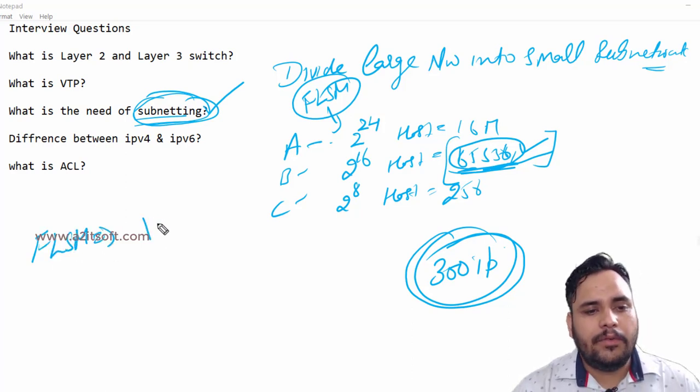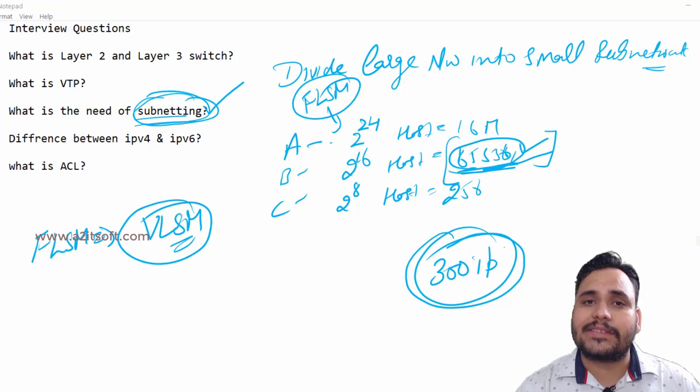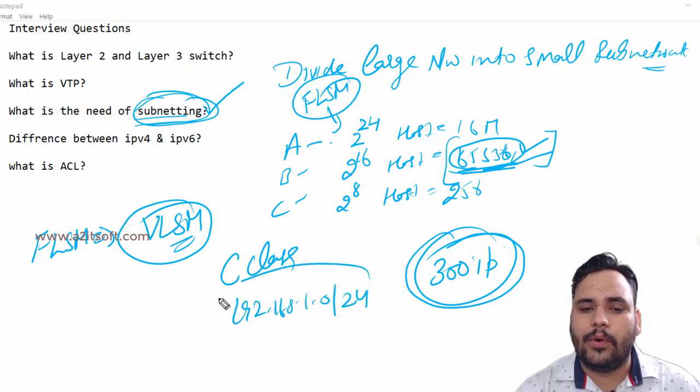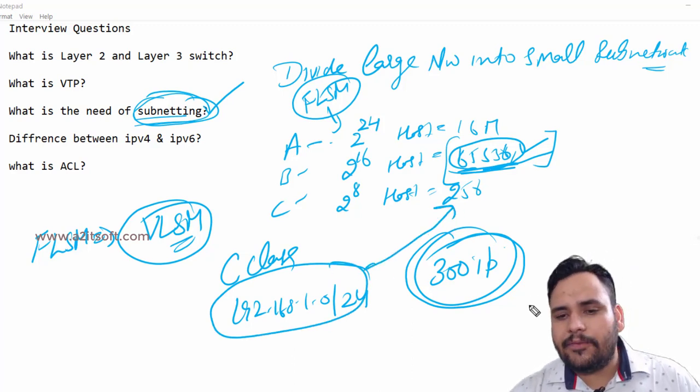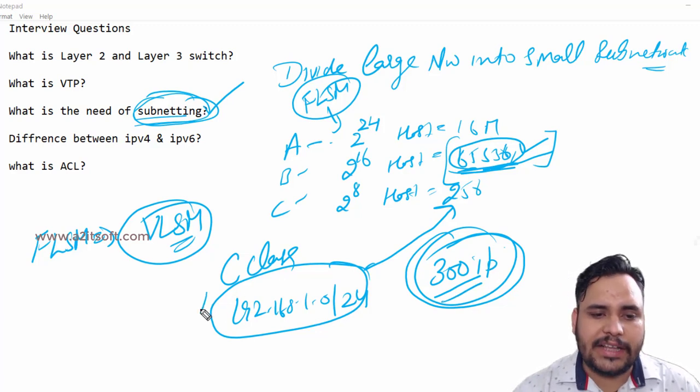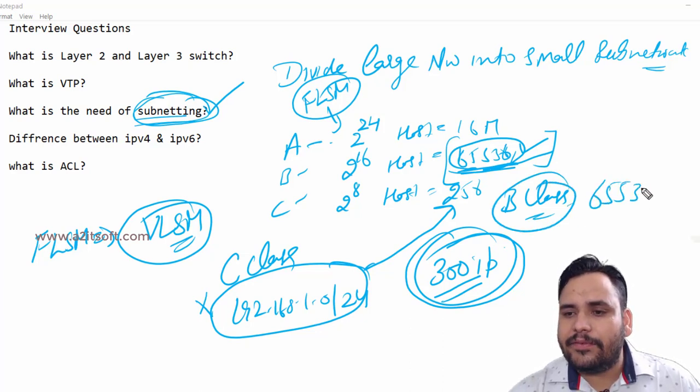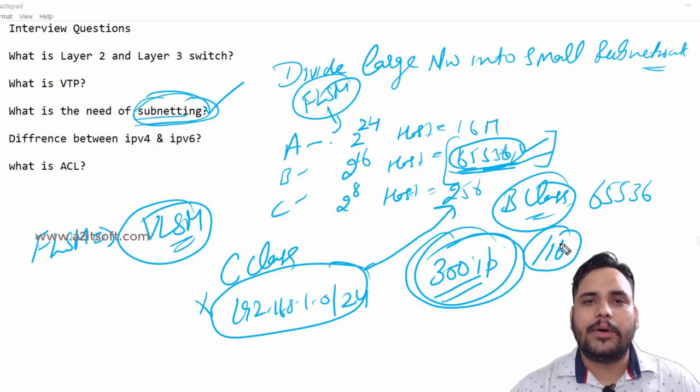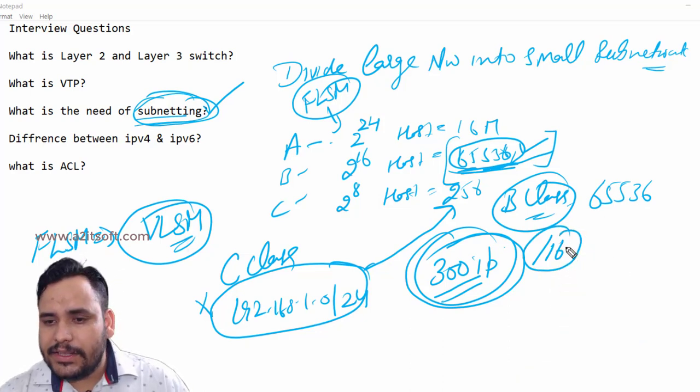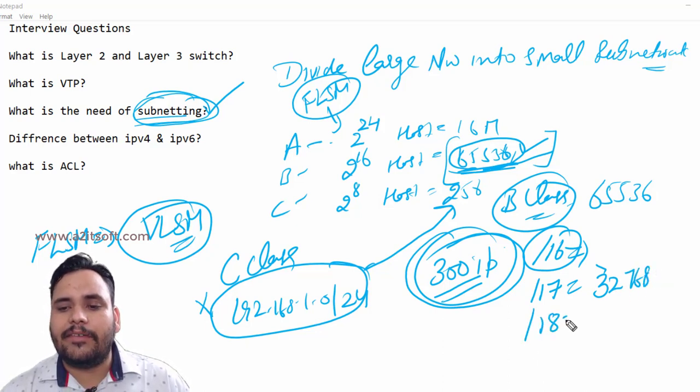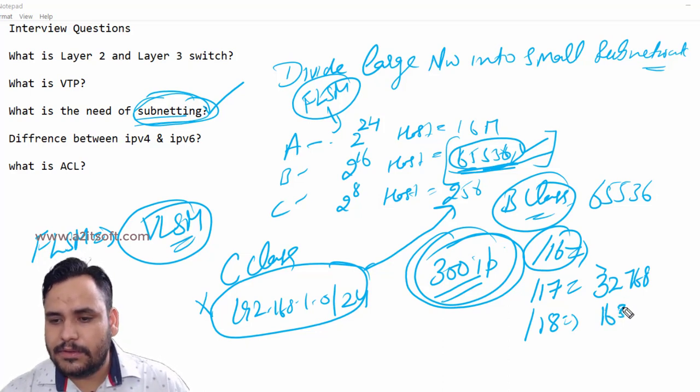Instead of fixed length subnet mask, we can work on VLSM - variable length subnet mask in subnetting. For example, taking a C class example: if I'm using this network /24, then I have 256 IPs. But if I need 300 IPs, this address is not used - I have to use B class. In B class, 65,536 IPs are used by /16. But if we change one bit to /17, then IPs should be half - 16,384. If we change the bit again it equals around 8,000.